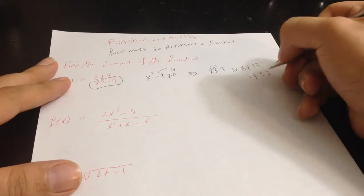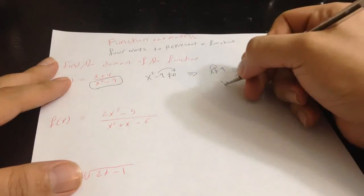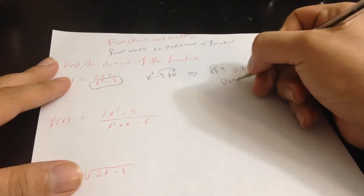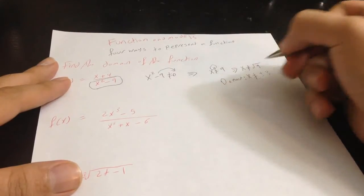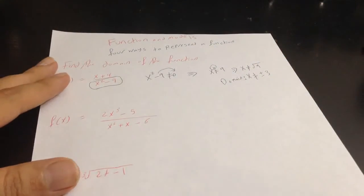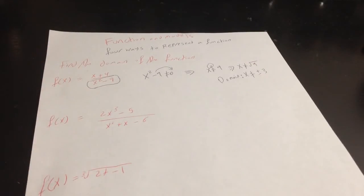So our domain is x not equal to positive or negative 3. It's very easy and simple. We have to write the domain.